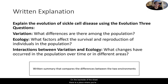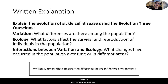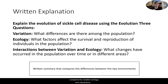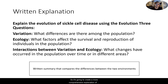On the back side of the sheet, there is a place where you're going to do a written explanation. It says: Explain the evolution of sickle cell disease using the Evolution 3 questions — Variation: What differences are there among the population? Ecology: What factors affect the survival and reproduction of individuals in the population? Interactions between variation and ecology: What changes have occurred in the population over time or in different areas? Essentially, you're taking the graphic organizer on the front and putting it into paragraph form — a written summary that compares variation, ecology, and interactions in an area with malaria and an area without malaria.